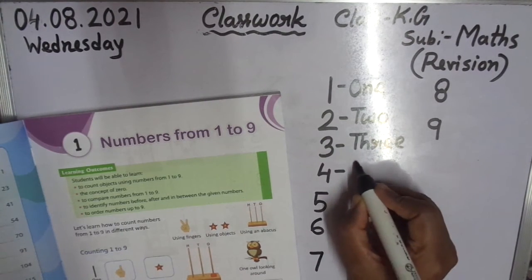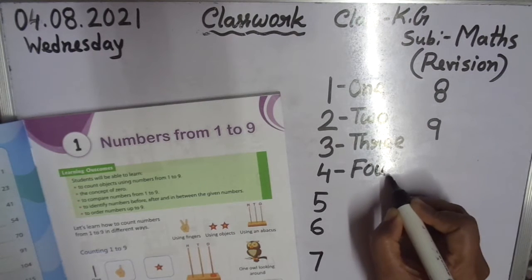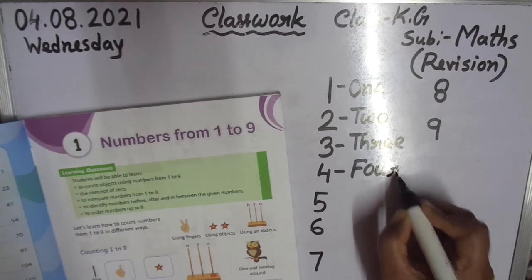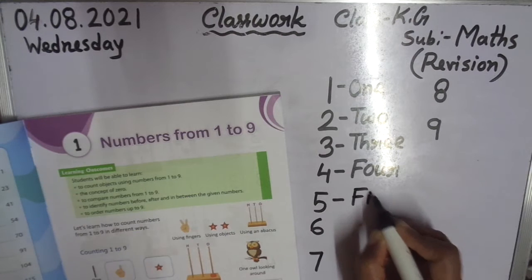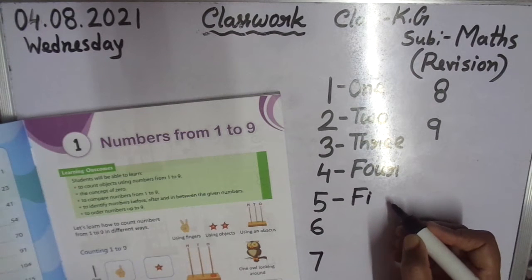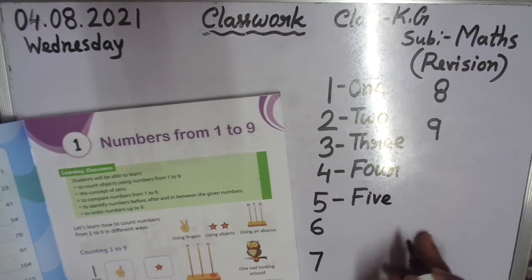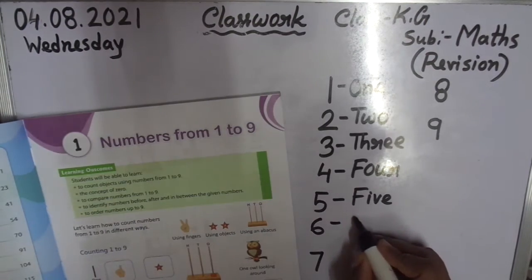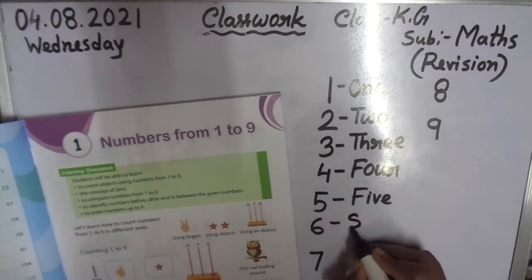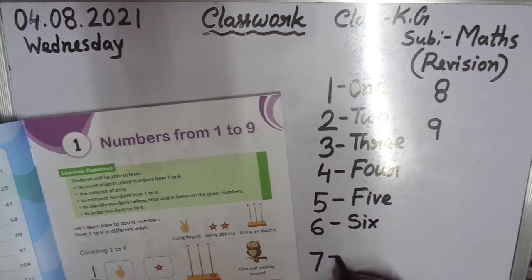4 — F, O, U, R: 4. 5 — F, I, V, E: 5. 6 — S, I, X: 6. 7 — S, E, V, E, N: 7.